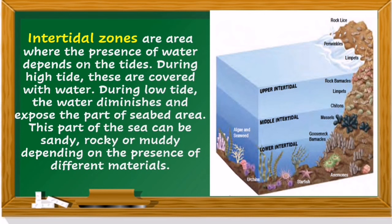Intertidal zones — what are these? Intertidal zones are areas where the presence of water depends on the tides. During high tide, these are covered with water. During low tide, the water diminishes and exposes part of the seabed area. This part of the sea can be sandy, rocky, or muddy depending on the presence of different materials.